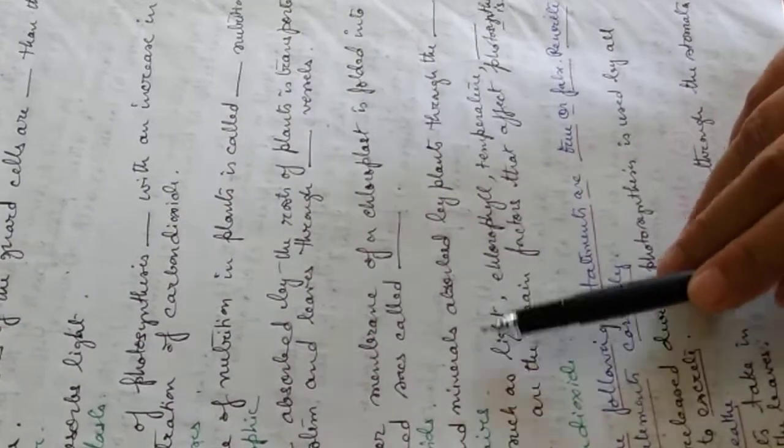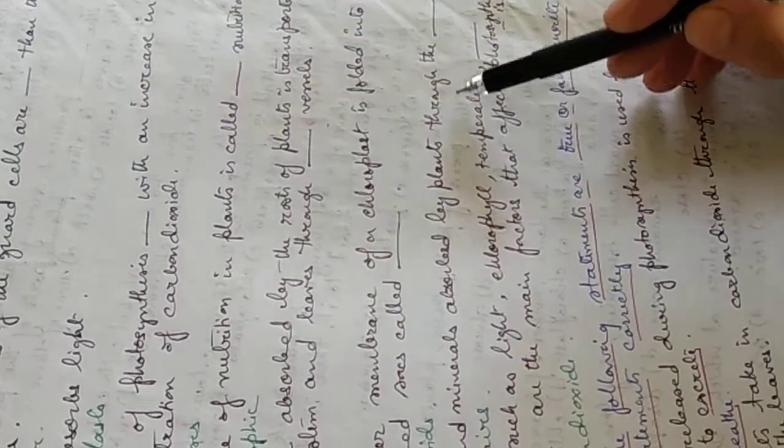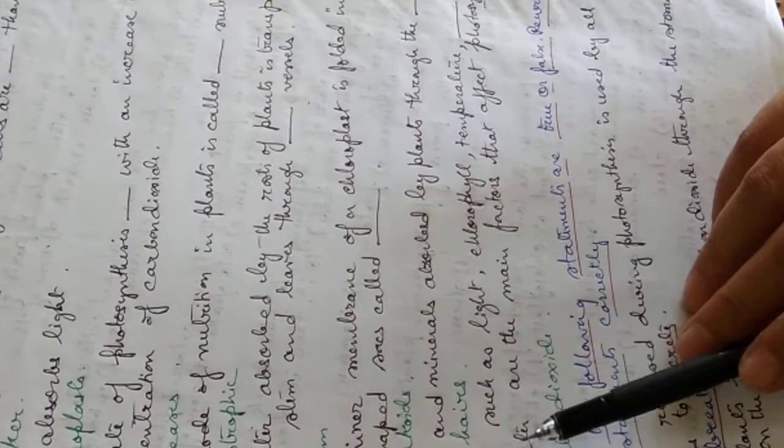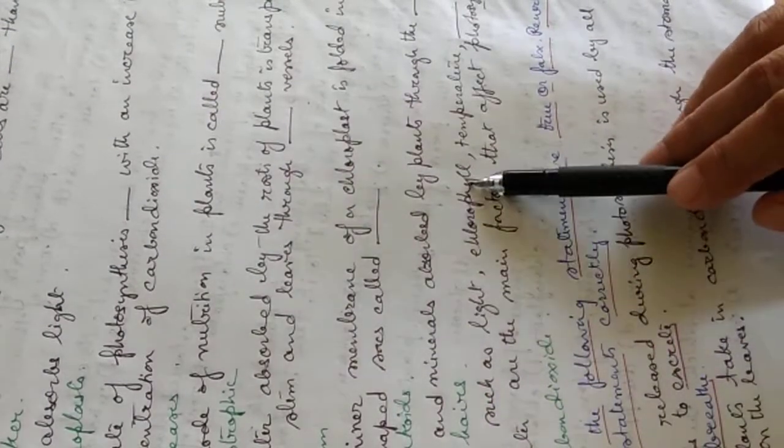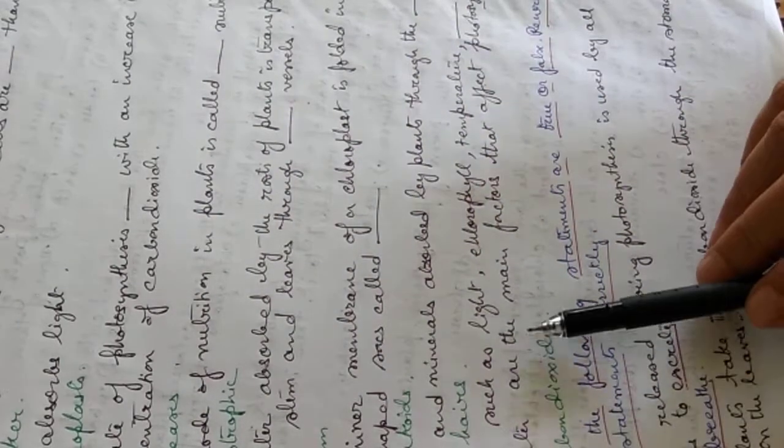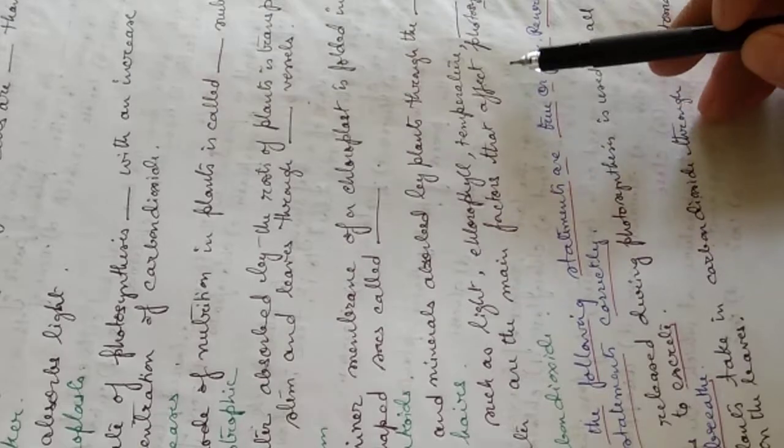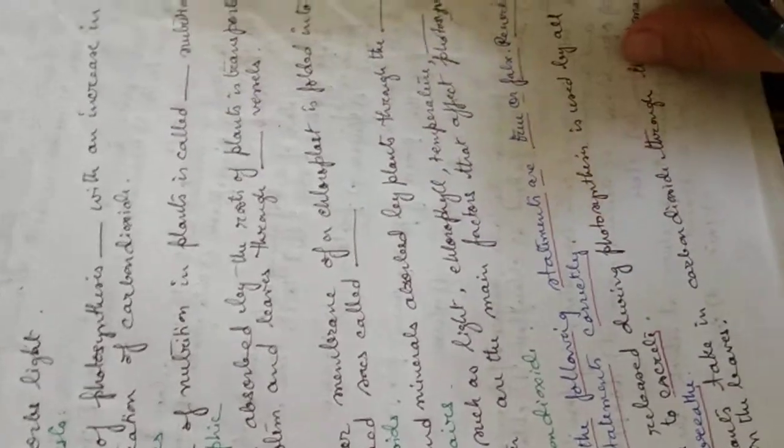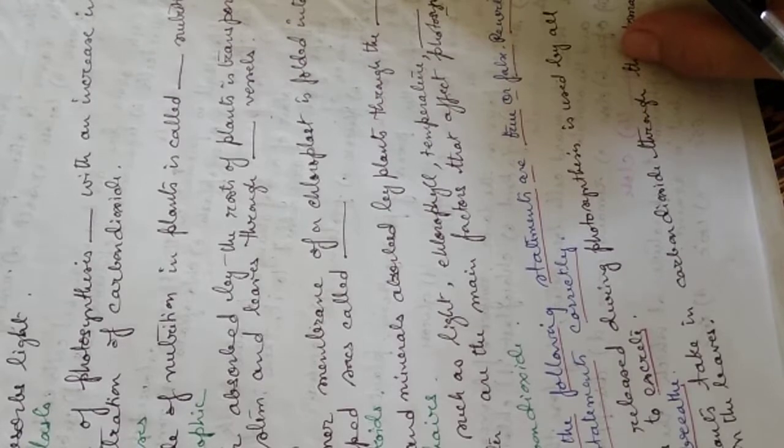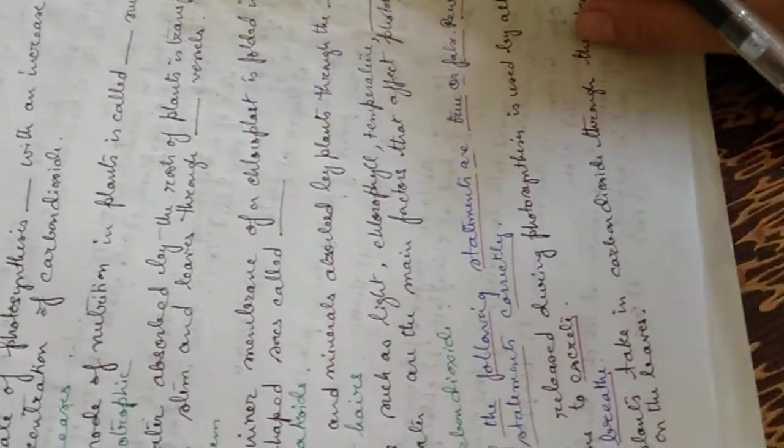Water and minerals absorbed by the plants through the dash. They are absorbed by the root hairs. Factors such as light, chlorophyll, temperature, and dash and water are the main factors that affect photosynthesis. We know it is light, chlorophyll, temperature, carbon dioxide, and water. The answer is carbon dioxide.